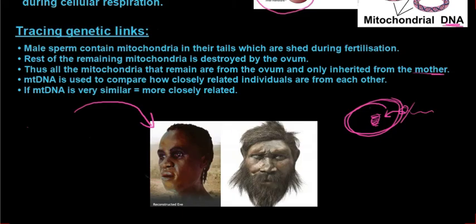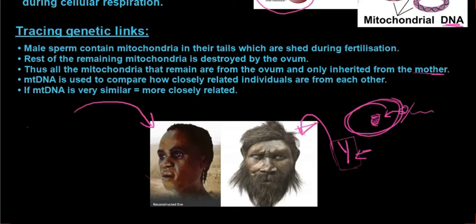For interest's sake — the Y chromosome can also be traced back, and they call him a Y chromosomal Adam. They've basically taken all the Y chromosomes of all men and traced it back to a single origin. The reason they can do that is because mitochondrial DNA and the Y chromosome don't recombine with any other chromosomes. The Y chromosome is very small, so it doesn't cross over with the X chromosome during prophase. Mitochondrial DNA also doesn't go through recombination, so it stays the same — there's no genetic variation, and that is why we are able to use it.